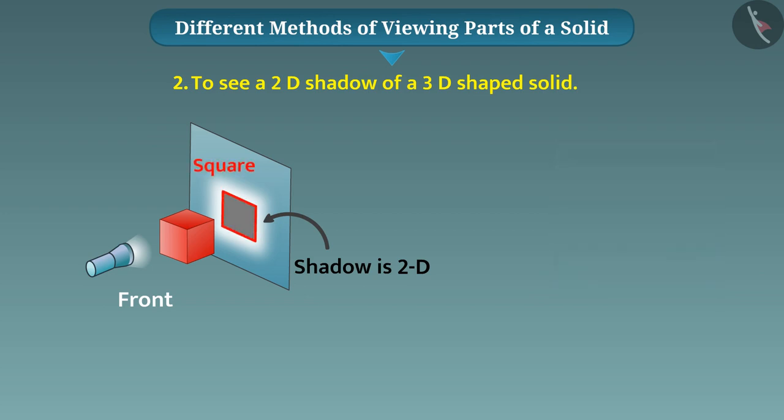Similarly, if we place the screen down and place the cube as shown above the screen, and light is focused from top, we will get a square shadow.